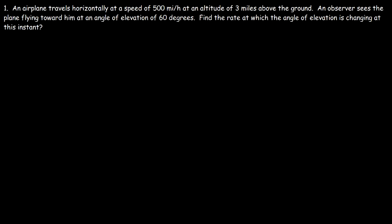An airplane travels horizontally at a speed of 500 miles per hour at an altitude of 3 miles above the ground. An observer sees the plane flying toward him at an angle of elevation of 60 degrees. Find the rate at which the angle of elevation is changing at this instant.